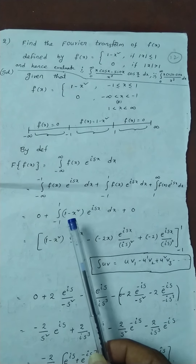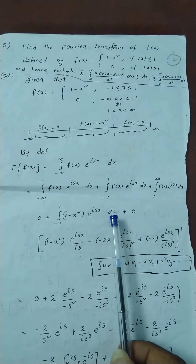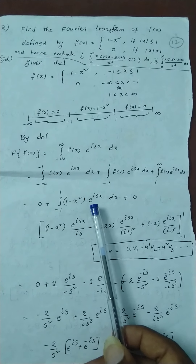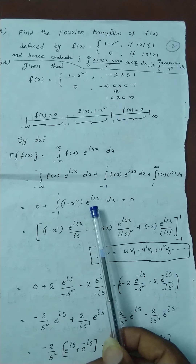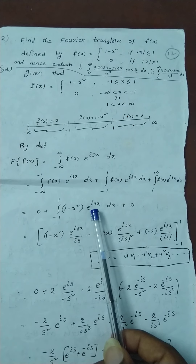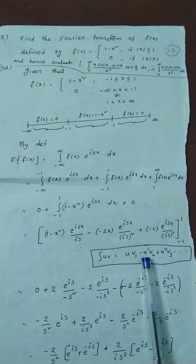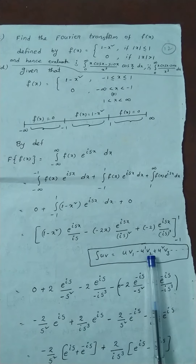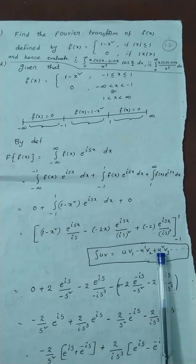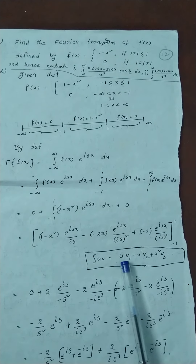Now we have to solve this integration. Here 1 minus x squared is an algebraic function and e to the power isx is an exponential function. Both are functions of x, so we apply the UV formula. Using the ILATE rule, exponential comes last and algebraic comes first. So let u equal 1 minus x squared and v equal e to the power isx. The UV integration formula is: u times v1 minus u-dash times v2 plus u-double-dash times v3, where v1, v2, v3 are successive integrals of v.